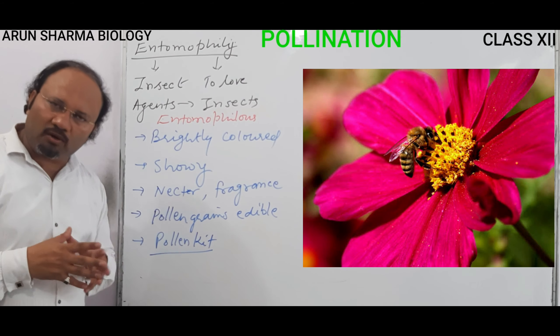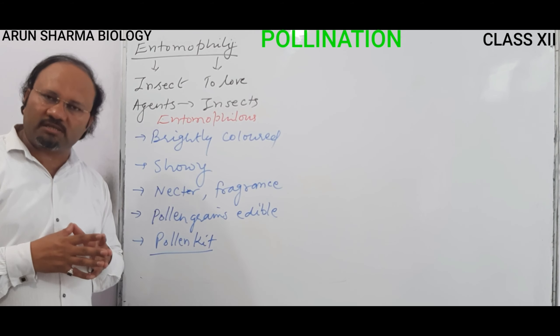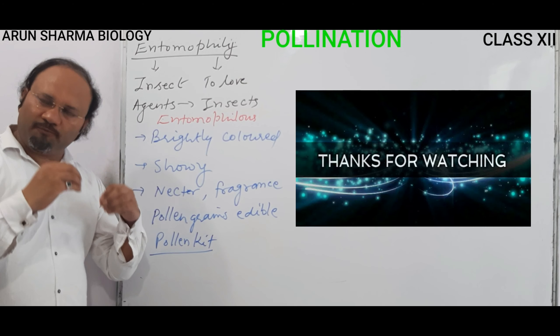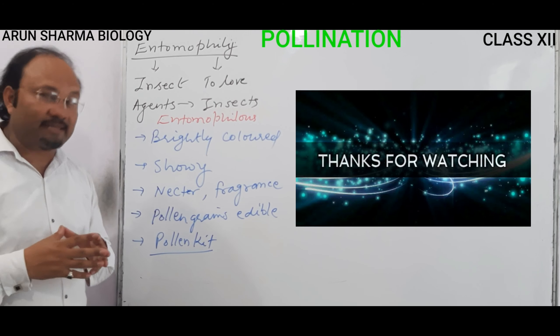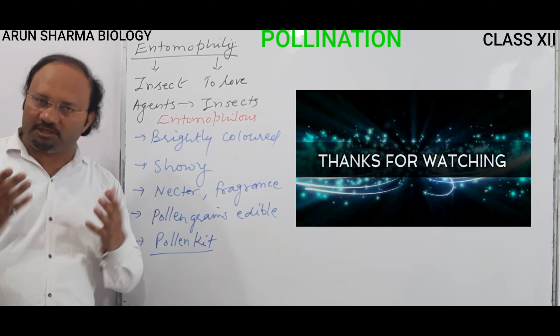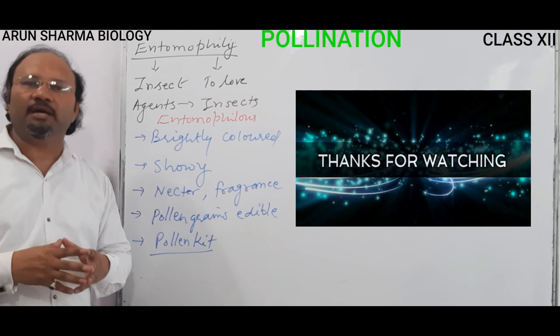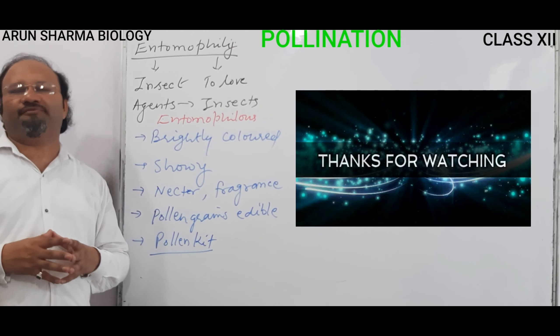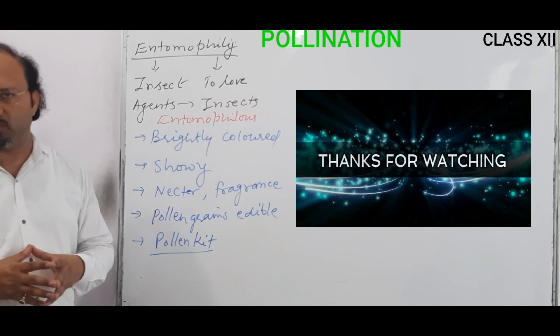So till now we have discussed the types of pollination and the different major types — anemophily, hydrophily, and entomophily. After this chapter, we will be moving on to the fertilization topic.